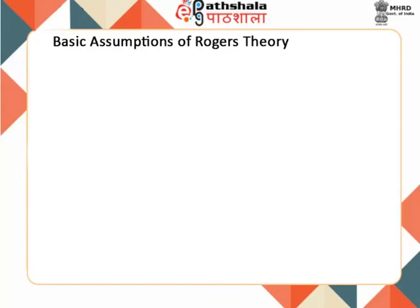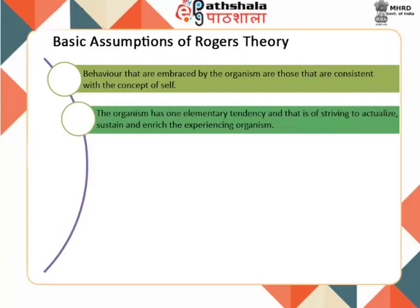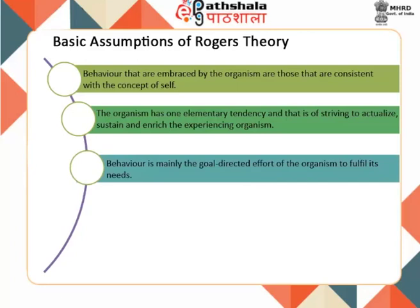Fifth, gradually a part of the complete perceptual field slowly becomes differentiated as the self. Sixth, behavior embraced by the organism is generally consistent with the concept of self. Seventh, one can comprehend behavior in a better manner through the internal frame of reference of the individual. Eighth, the organism has one elementary tendency — that of striving to actualize, sustain, and enrich the experiencing organism.